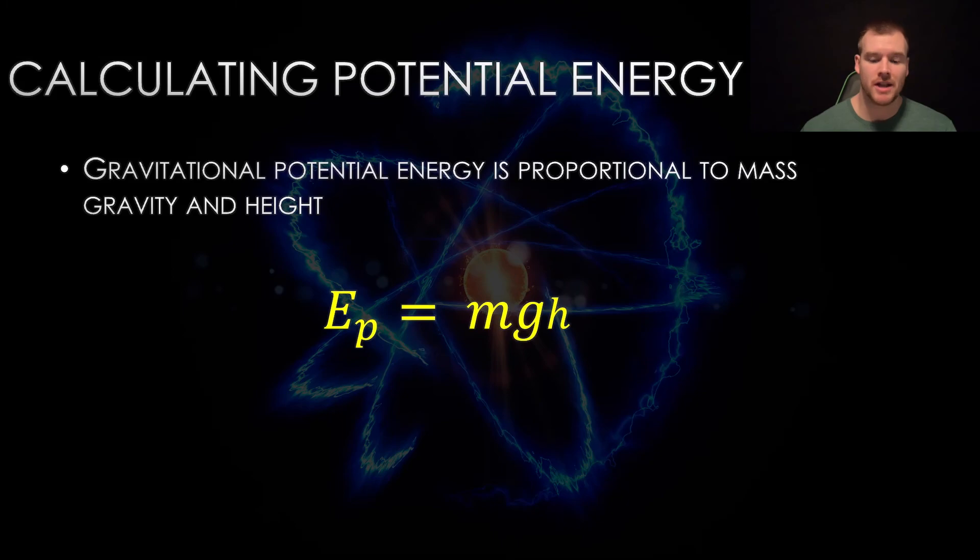Next, we're going to calculate potential energy. There is gravitational, chemical, and elastic. We are only going to be calculating gravitational. Gravitational potential energy is proportional to how heavy something is—mass, gravity, and height. We can think of this as how much work it takes to lift something. If you take something light and lift it a small distance, it's not very hard. But if you take something heavy and lift it a high distance, that's much more difficult.